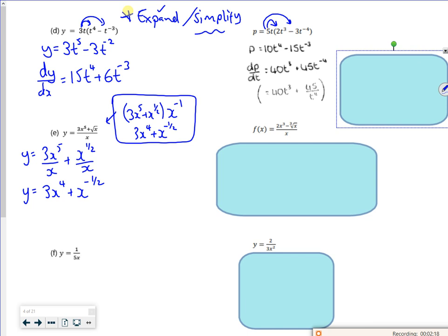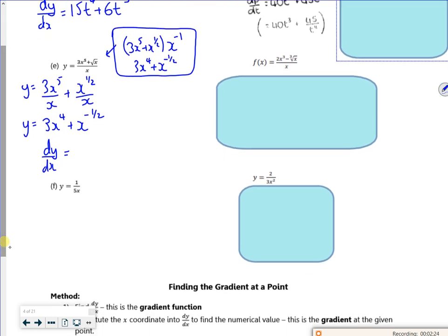But remember, I've not done anything with it yet, so I need to differentiate it. All I've done is tidy it up after breaking them. So 3 times 4 is 12, take 1 off the power, then bring the power down, take 1 off the power, gives me minus 1 over 2. So minus 1 half x to the minus 3 halves.